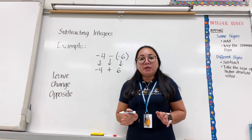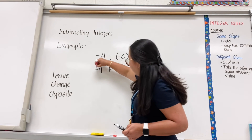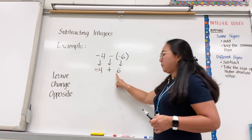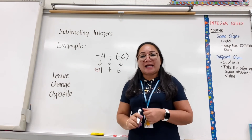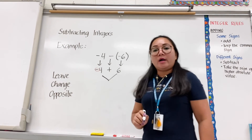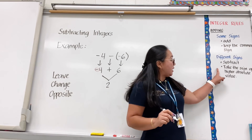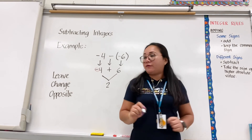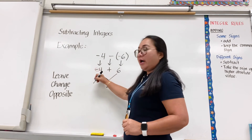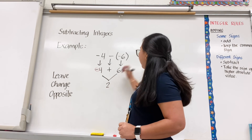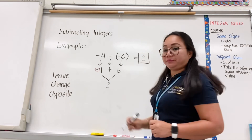Now apply the rules for adding integers. We have negative 4 and positive 6 — they are integers of different signs. So 6 minus 4 is 2. Take the sign of the higher absolute value: 6 is higher than 4, and the sign of 6 is positive. So the answer is positive 2.